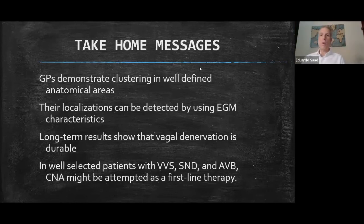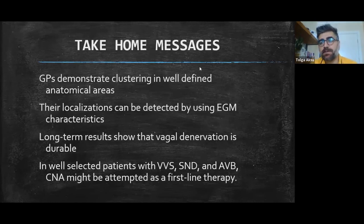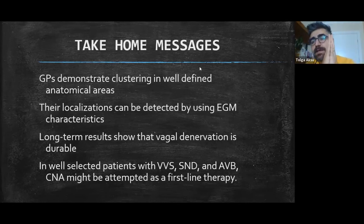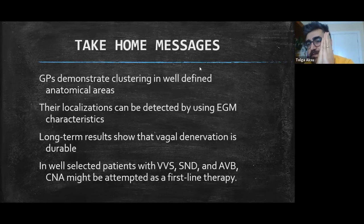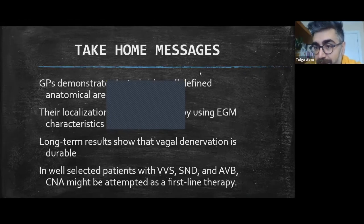Regarding epicardial ablation of GPs: although GPs are located in the sub-epicardial area, they are positioned between left atrial and right atrial structures, making epicardial access difficult. Bi-atrial ablation via the endocardial route is therefore preferred over epicardial ablation for achieving more complete vagal denervation.